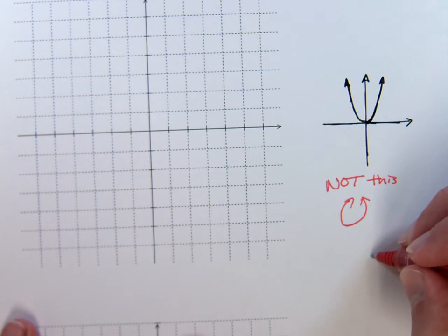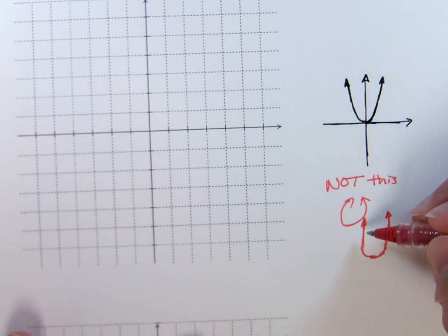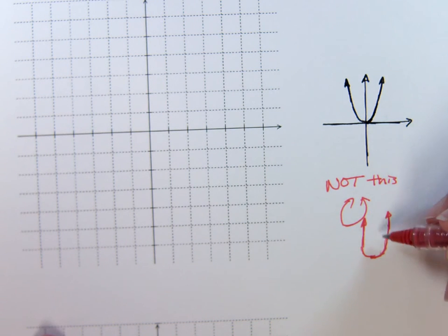Also, do not do this. Do not make him go vertical. If you make this guy go vertical, then he's not a function. Functions have to pass the vertical line test, and this guy definitely would not.